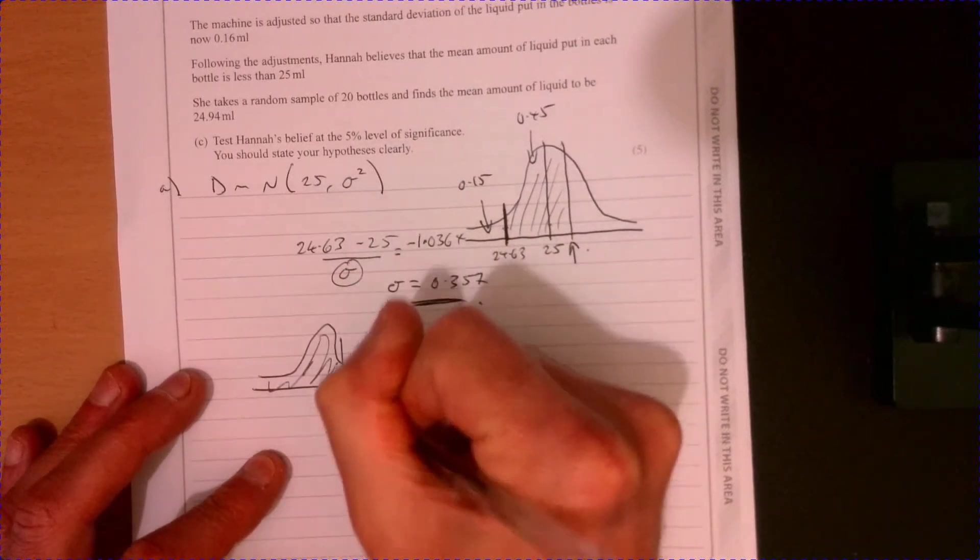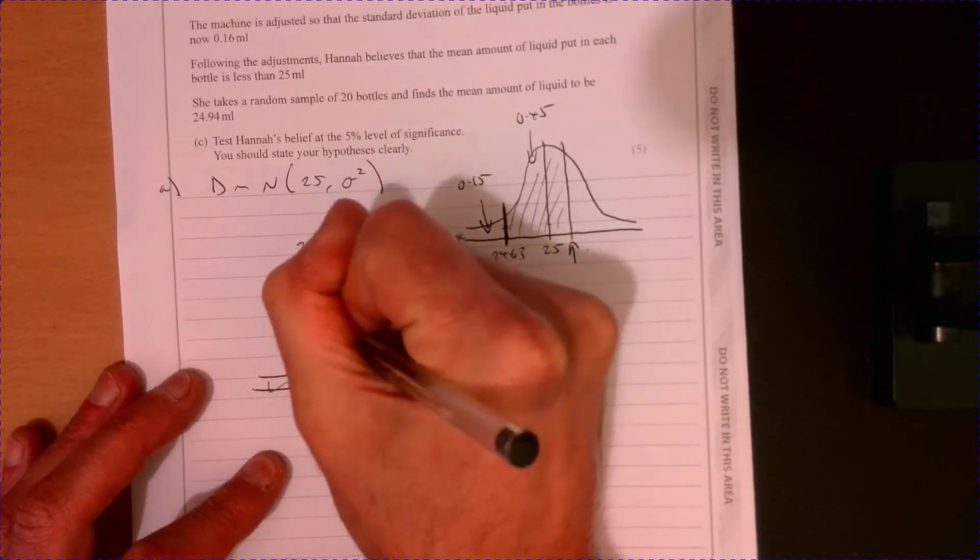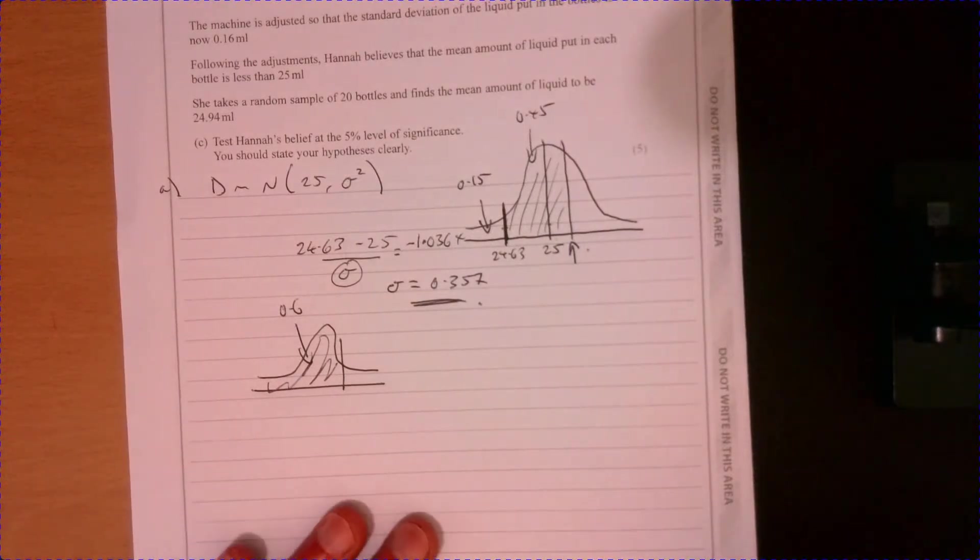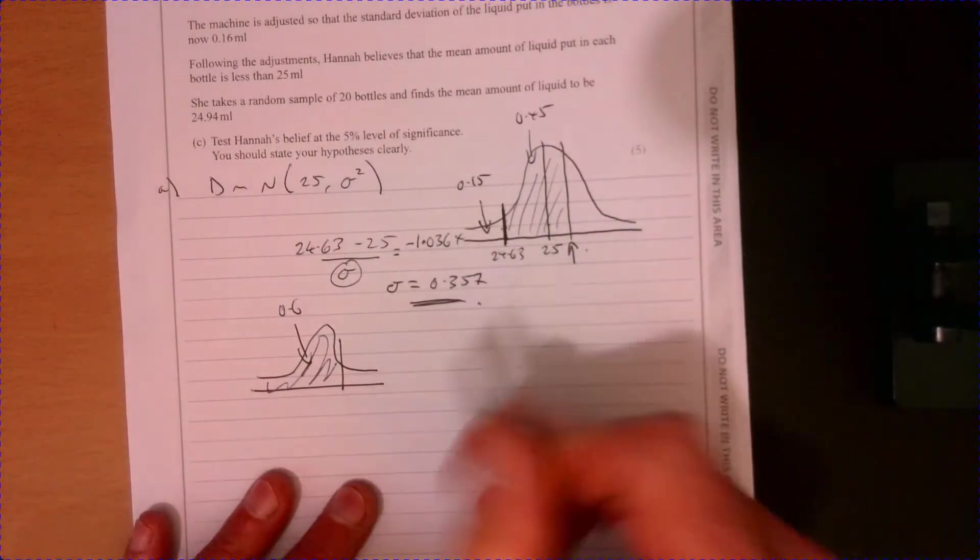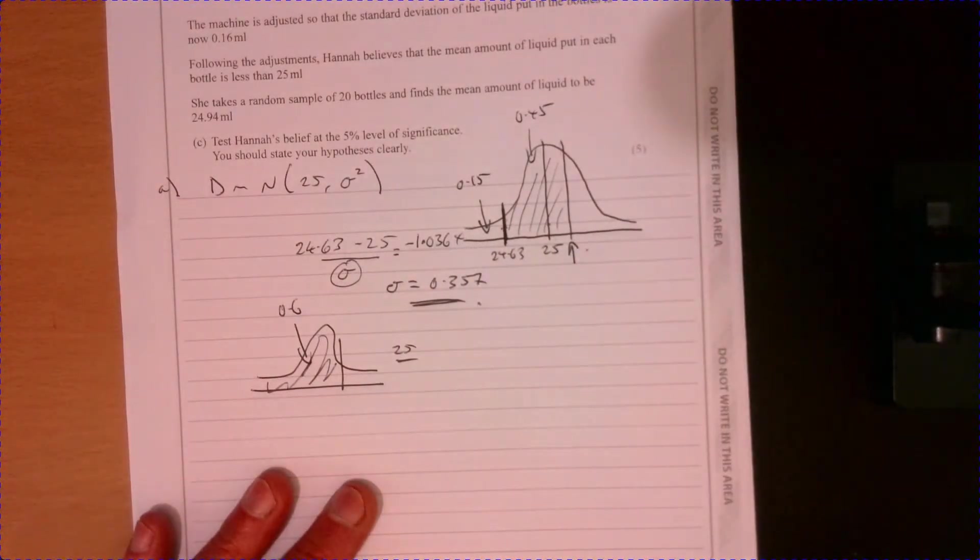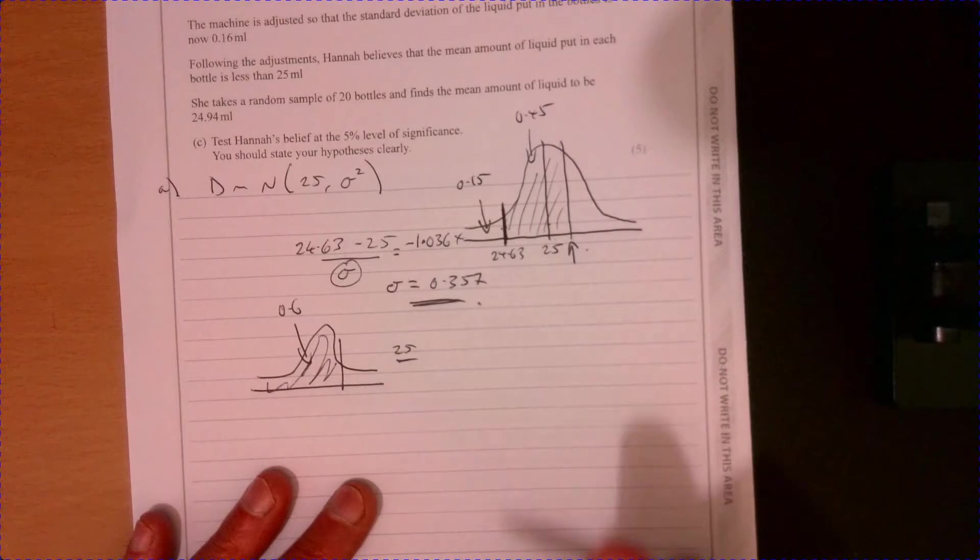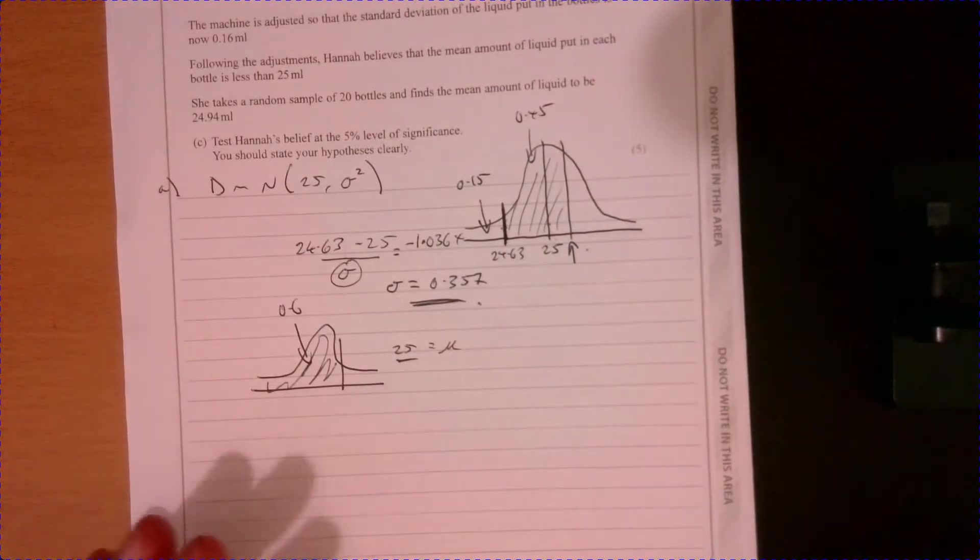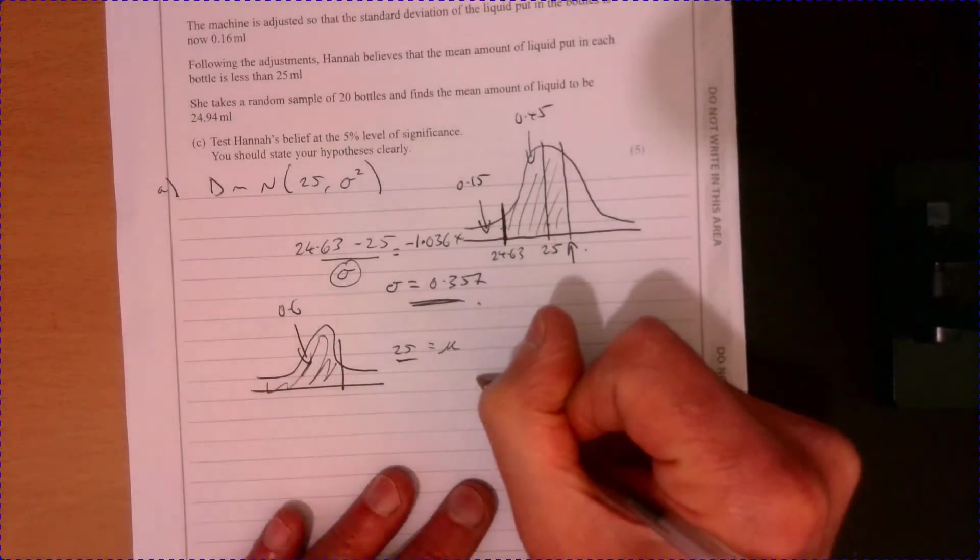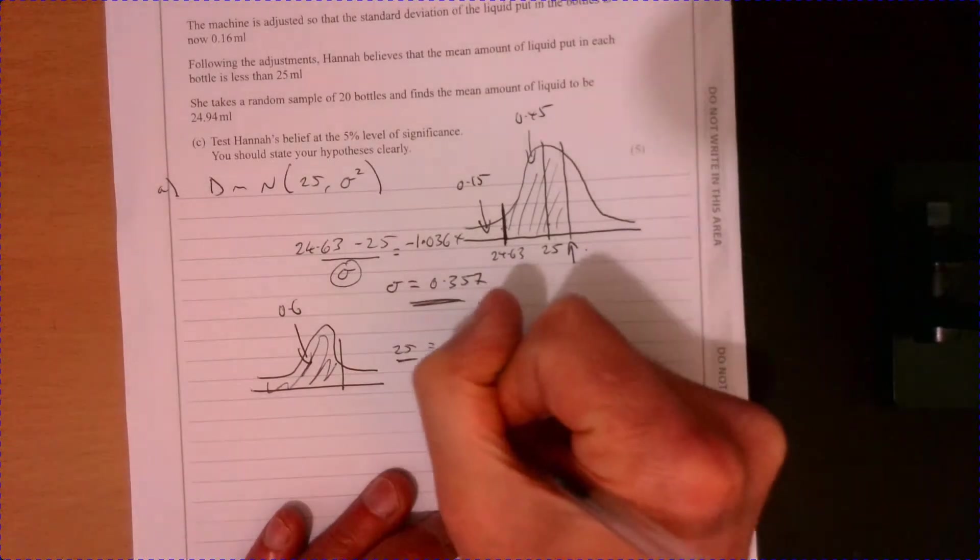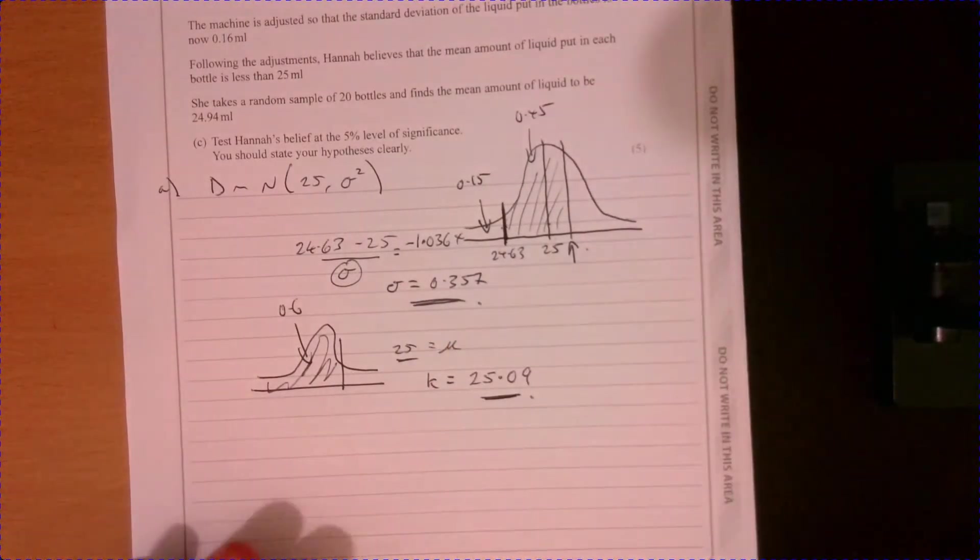So in order to do that, 0.15 plus 0.45. Wait a minute. That's 0.6. Maybe just draw another little diagram just to help you. So I want that lot to be 0.6. So I know what the mean is. And we've just worked out our standard deviation. And if I just plug those into my calculator, that's going to give me 25.094 K.